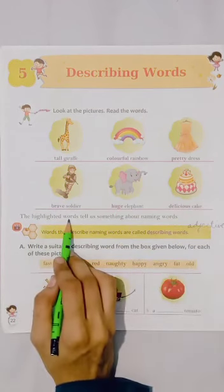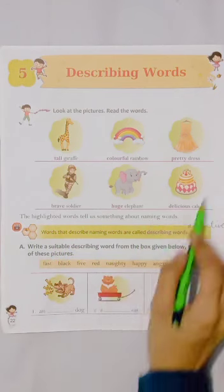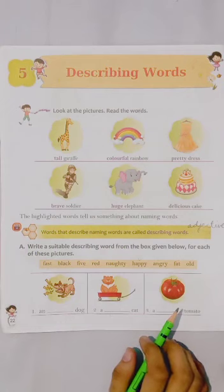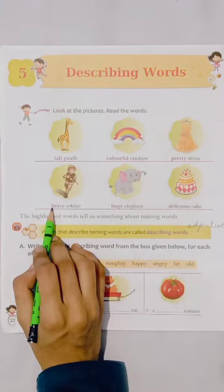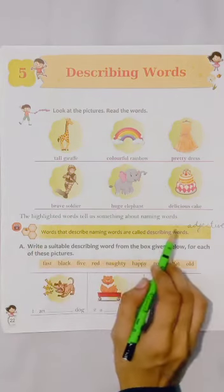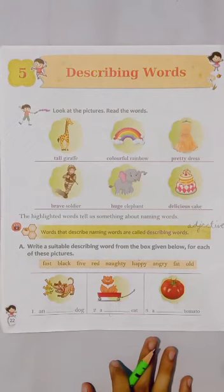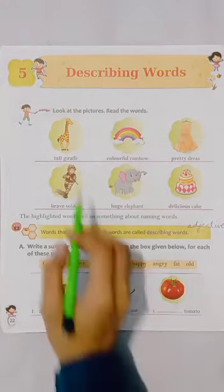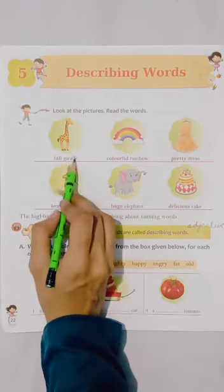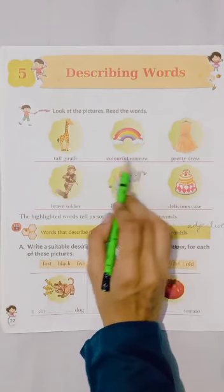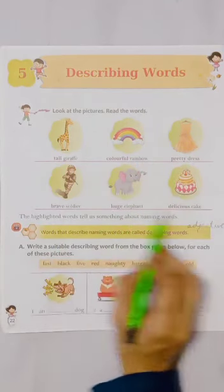The highlighted words tell us something about naming words. As you can see, there are some words which are highlighted — kuch words highlight kie gai hai, jo purple color mein yeh words hai. These highlighted words are telling us something about the naming words — yeh highlighted words hame in naming words ke baare meh bata rahe hain. Jaise giraffe kaisa hai — tall hai, rainbow colorful, dress is pretty, soldier is brave, elephant is huge, and cake is delicious.